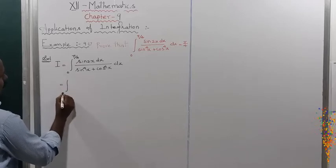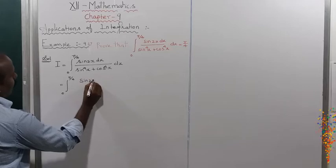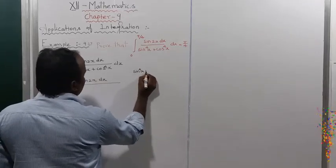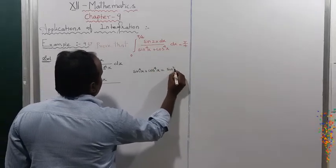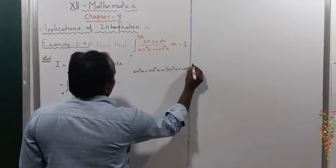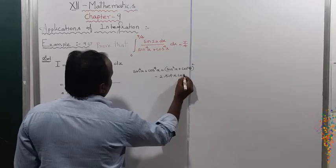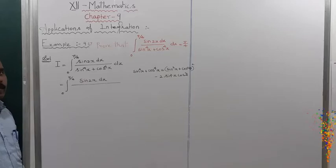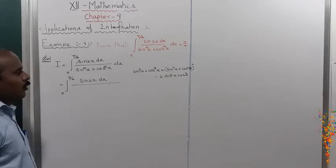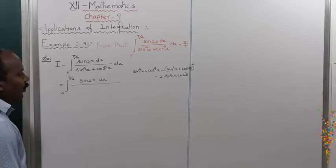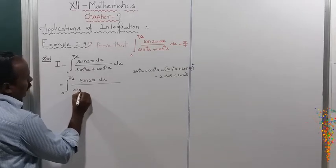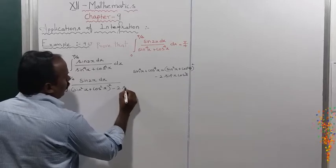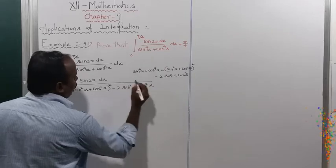First, we simplify the denominator. The identity is: sin⁴x + cos⁴x = (sin²x + cos²x)² minus 2·sin²x·cos²x. That is the formula used for the modification term, expressing sin⁴x + cos⁴x in a workable form.